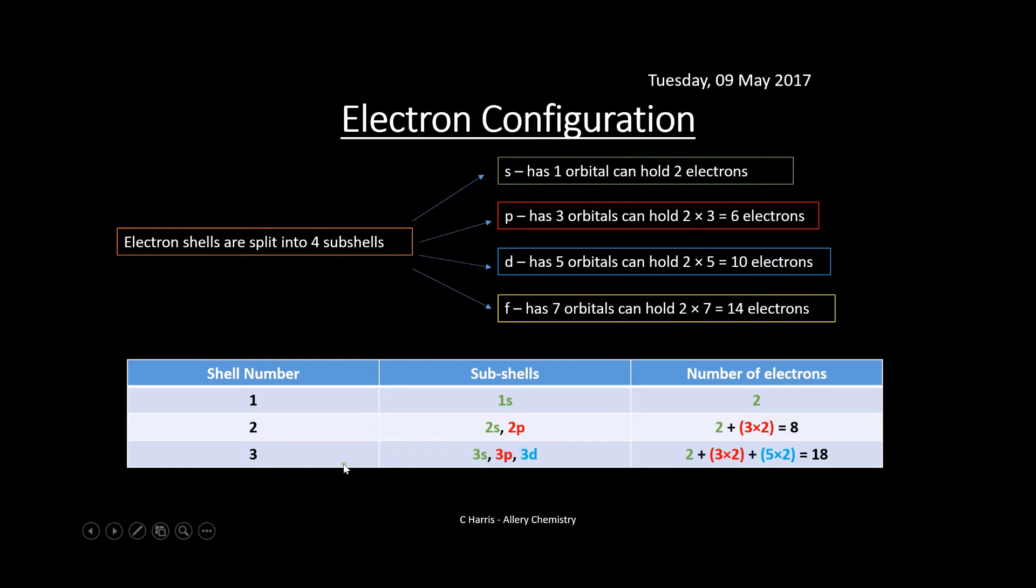In shell number three, we have the 3S, 3P, and 3D subshells. This can hold up to 18 electrons. We've got two electrons in the 3S, six electrons in the 3P, and 10 electrons in the 3D. So you can see how this is structured and the order. You're going to get used to this because we need to give electron configuration for subshells instead of just shell numbers.